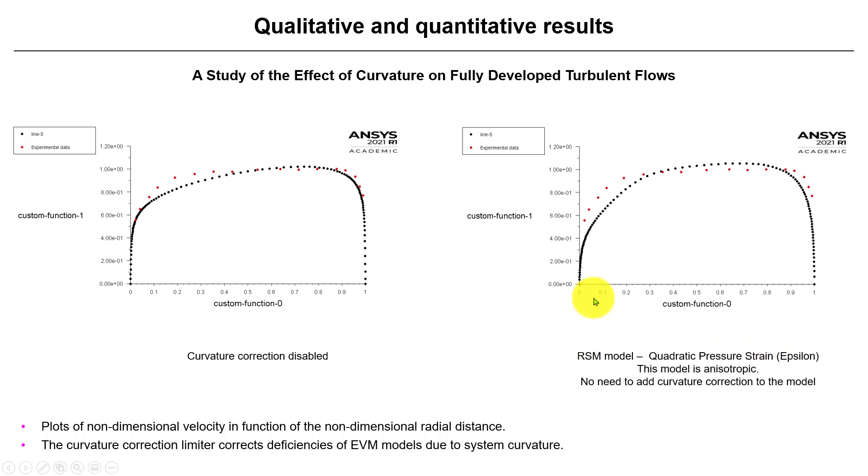And then also we can run without this curvature correction. For instance, the Reynolds stress model, you don't need to do that. So see that we have this behavior. That kind of tends to replicate with some differences, but it tends to replicate these results.